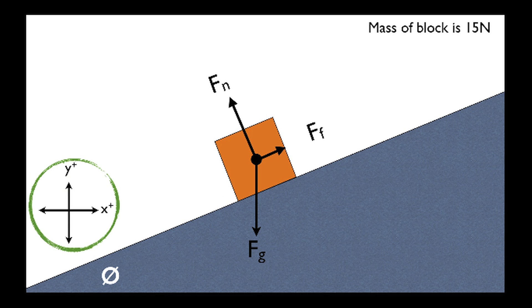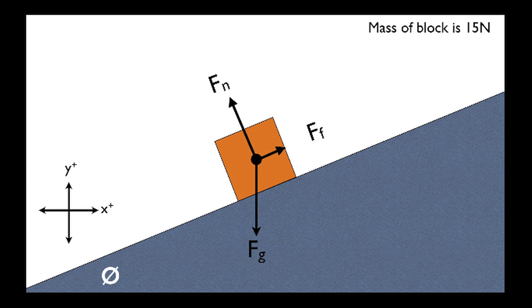The problem I had with the inclined plane questions was that there were so many angles to take into account. Both the force of friction and the normal force were at weird angles, and the only force that wasn't at an angle was the force of gravity. Breaking up all of these into their x and y directions was just way too hard.